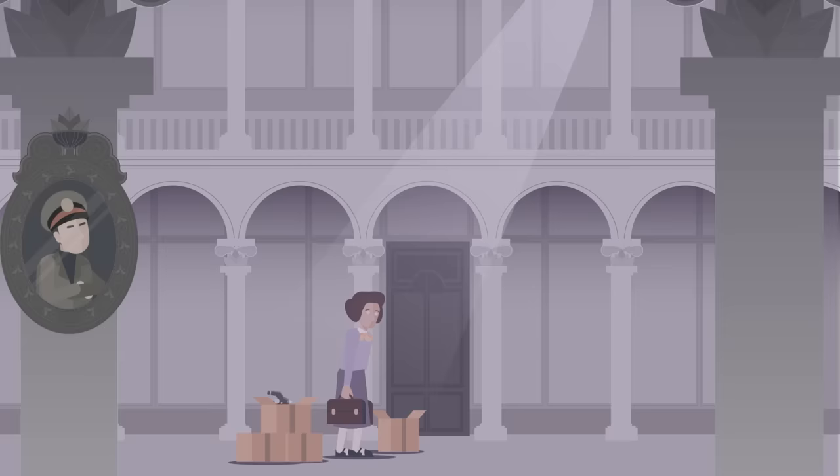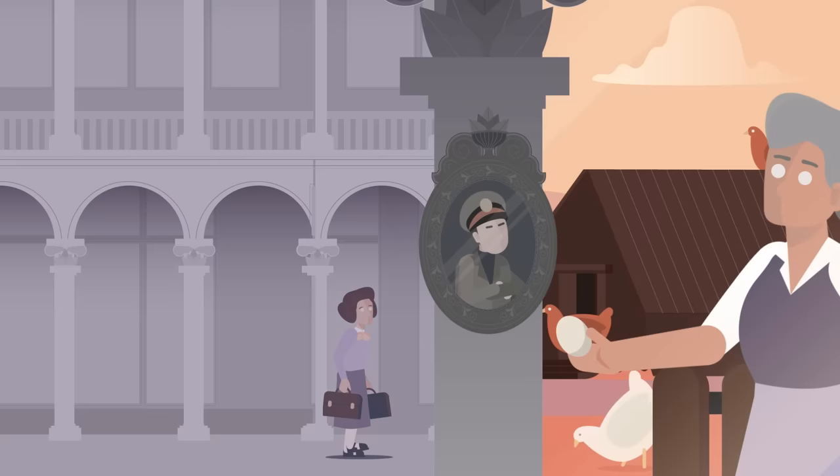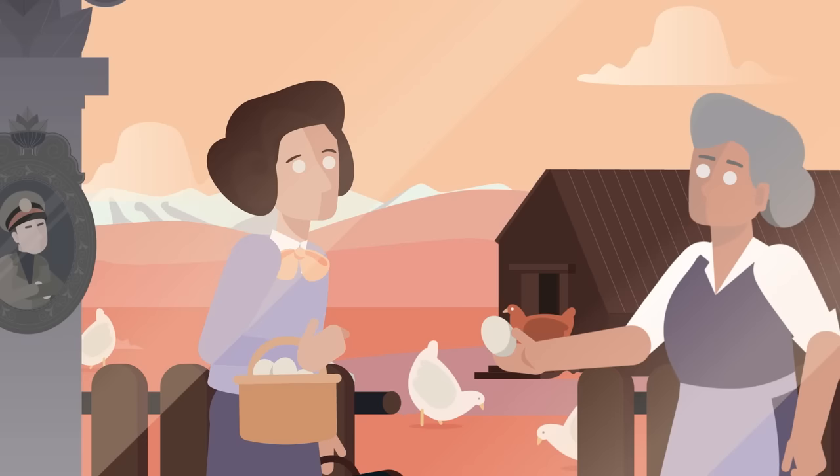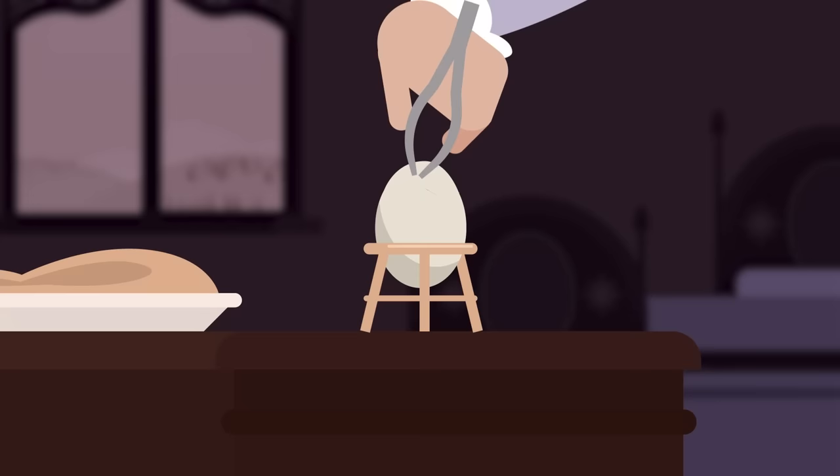However, as the fascist dictator Benito Mussolini banned Jews like her from academia in 1938, she had to carry out her research in secret. She would ask for eggs to feed her children, even though she had none, and instead dissected the fertilized chicken eggs to observe the developing embryos.